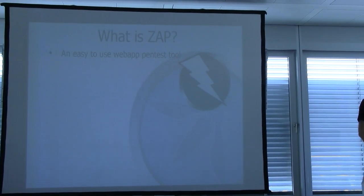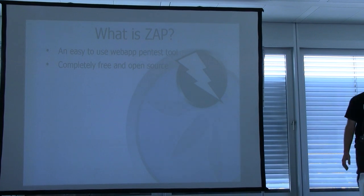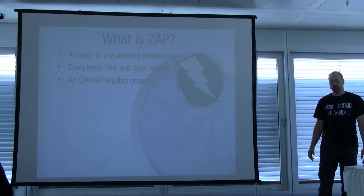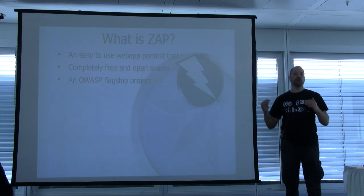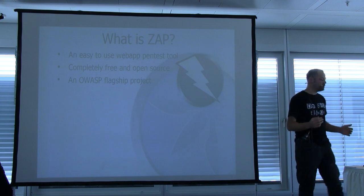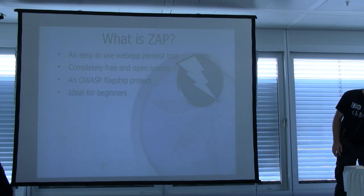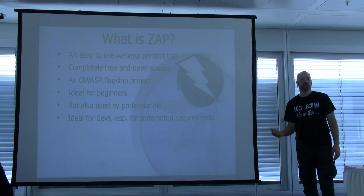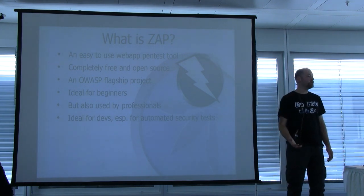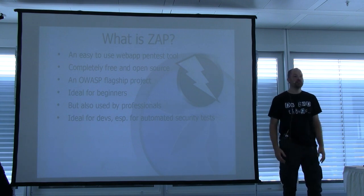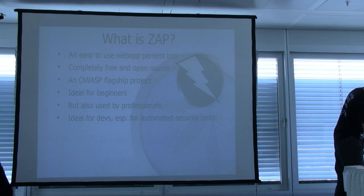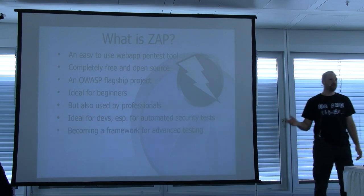Quick run through. What is ZAP? It's a tool for doing penetration tests on web applications. It's easy to use, completely free and open source, like all OWASP projects — there's no pro version and there's not going to be one. It is an OWASP flagship project, meaning it's considered among the highest quality projects people should really use. It's ideal for beginners but also being used a lot by professionals. My background is actually development, and I wanted to make sure it's ideal for developers to use in automated security testing — as part of continuous integration. It's also becoming a framework for advanced testing.